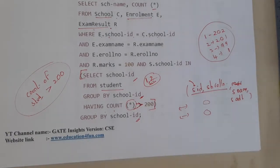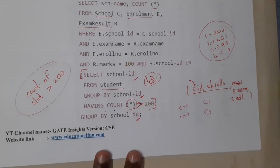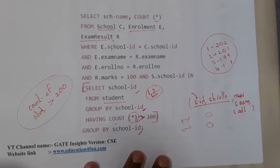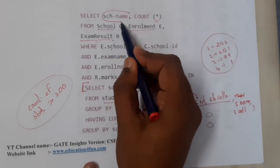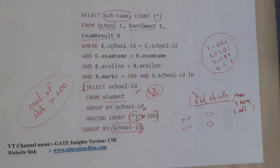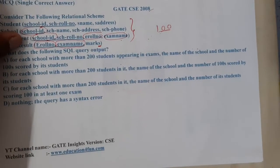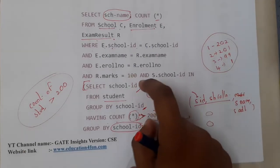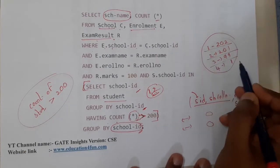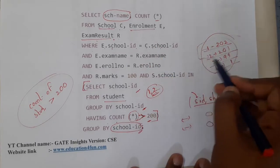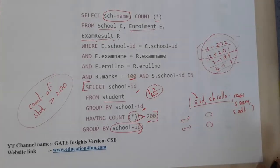Now I understand what they are trying to do: find students scoring 100 marks in schools from the inner query. However, I noticed a small mistake — the outer query selects school name but groups by school ID. In SQL, if you group by something you should select that same column, and vice versa. So there is an error in this query.